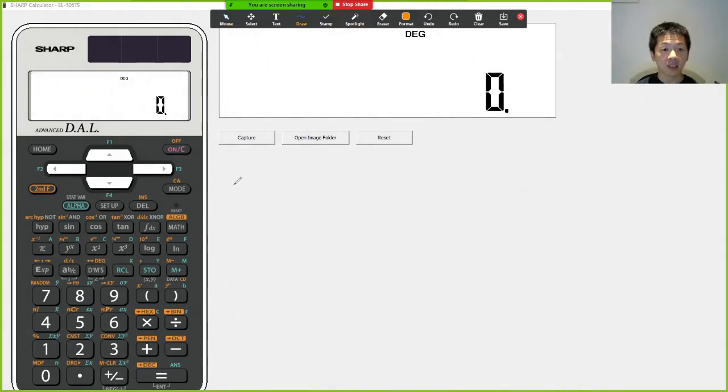So if you like the calculator I'm using here, you can always go on Amazon. There's a link that I put down in the description. You can always click on that and you get the exactly the same model as what I have here, which is EL506TS. And this is Sharp. So if you like this model, you can always buy that using the link below.